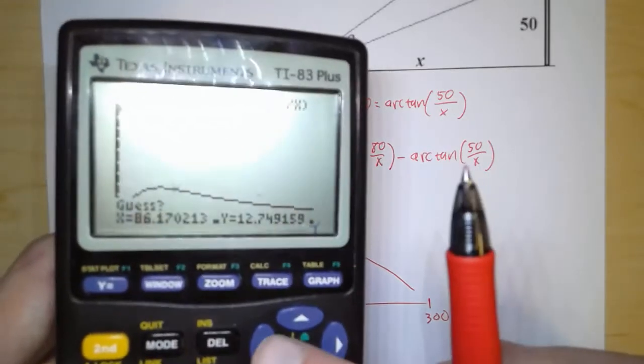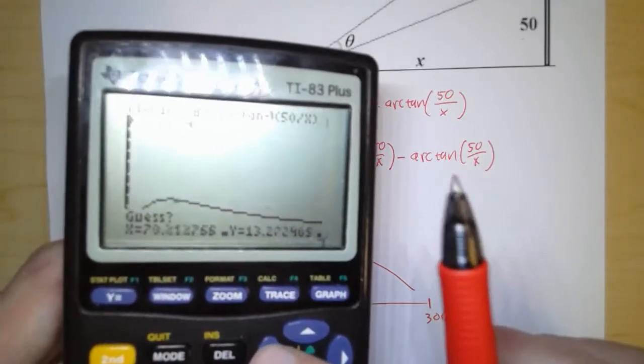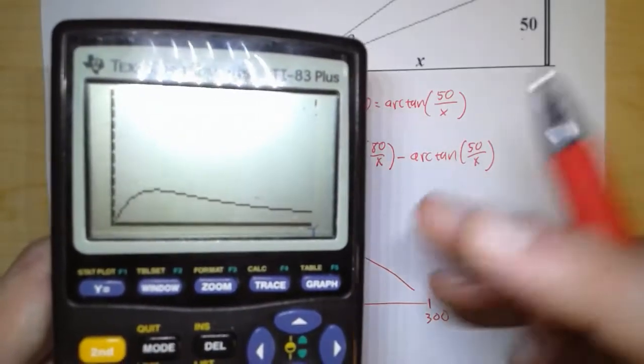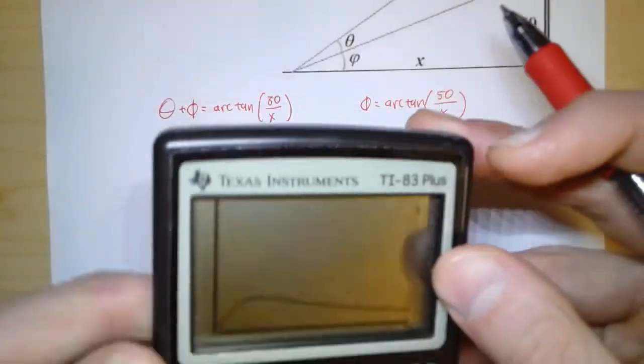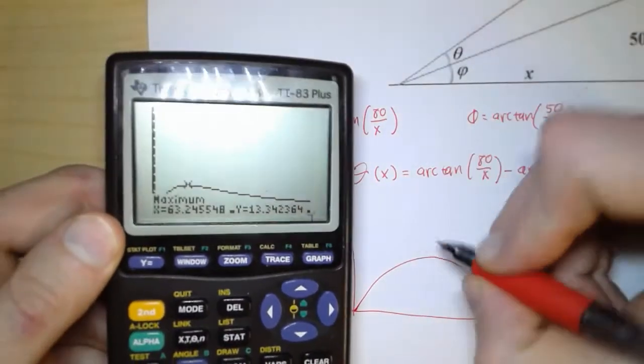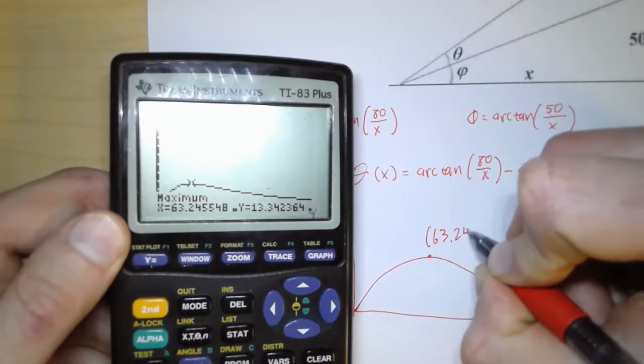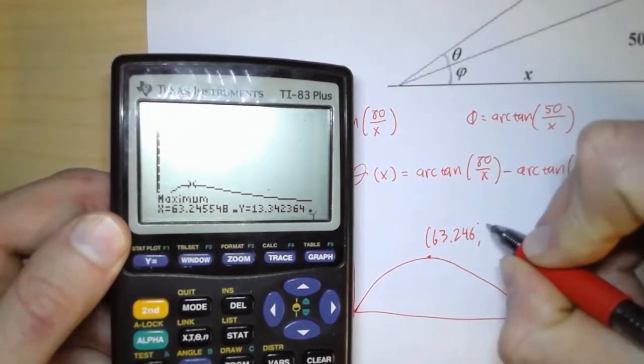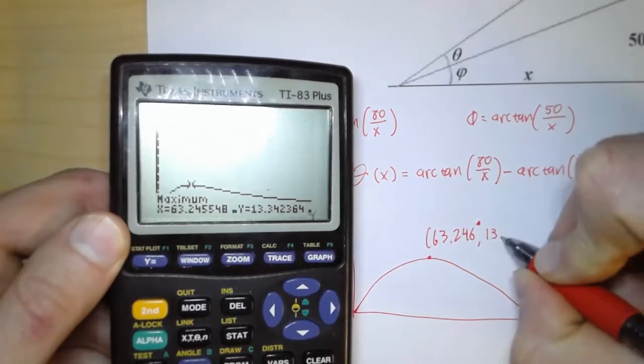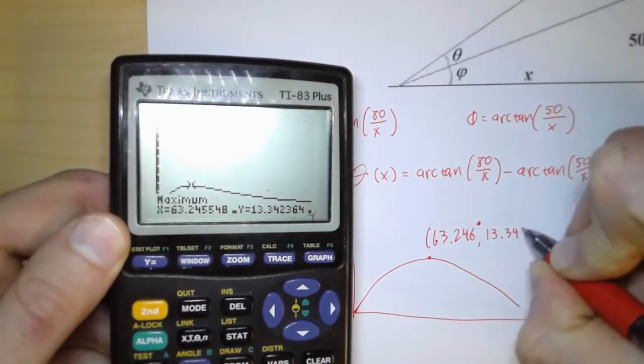And that's good enough. And then my guess, I'll put my cursor right on top of it. There we go. So the calculator gives me a coordinate of 63.246, 13.342.